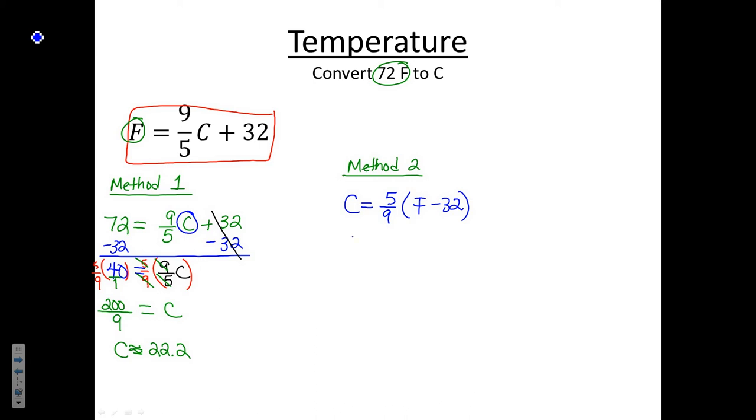So in place of F, I'm going to substitute in the 72. So C equals 5/9 times 72 minus 32. And as we do this, I want you to notice the relationship between method one. First thing, based on order of operations that I would do, is what's inside the parentheses first. 72 minus 32, which is 40. And notice we came up with 40 over here as well, when we did 72 minus 32.